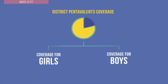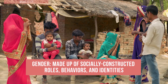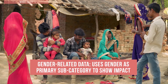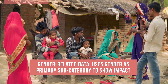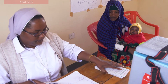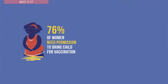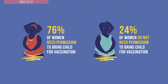Let us say your district has Pentavalent 3 coverage of 74%. Coverage for girls in your district is 75% and coverage for boys is 73%. Gender is made up of socially constructed roles, behaviours and identities. Gender data uses gender as the primary subcategory to show the impacts of gender-related issues. Often, you will find useful information when you consider the gender of caregivers and health workers. For example, you could consider whether women in the community must have permission from their husband or another relative to bring their child for vaccination. This could represent a barrier to access and could lead to lower coverage.